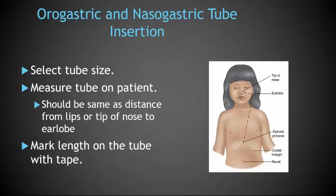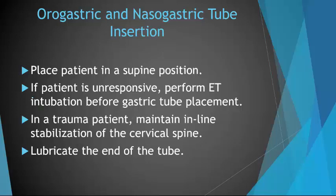To perform NG placement, select your appropriate tube size and measure the tube on the patient — the distance from the lips or tip of the nose to the earlobe. Mark the length of the tube with tape and place the patient in a supine position. If the patient is unresponsive, always perform ET intubation before gastric tube placement. In a trauma patient, maintain inline stabilization of the cervical spine and lubricate the end of the tube.